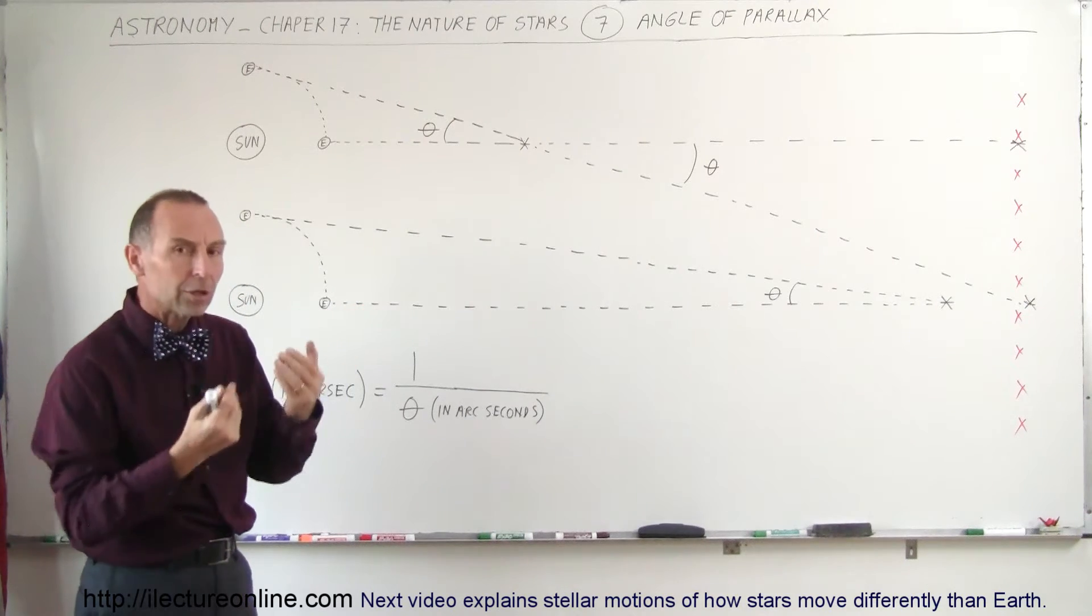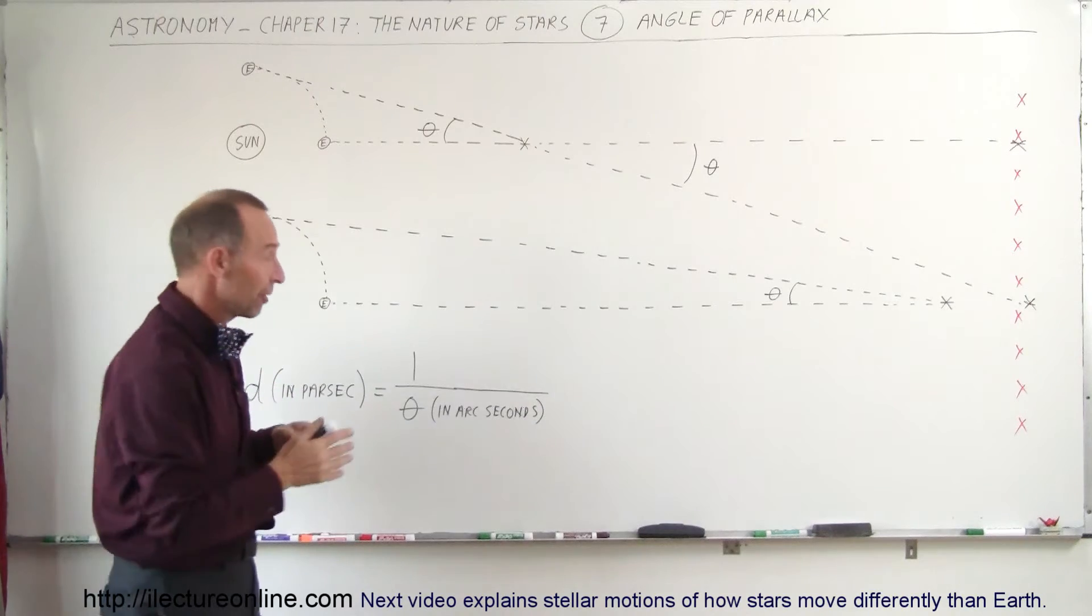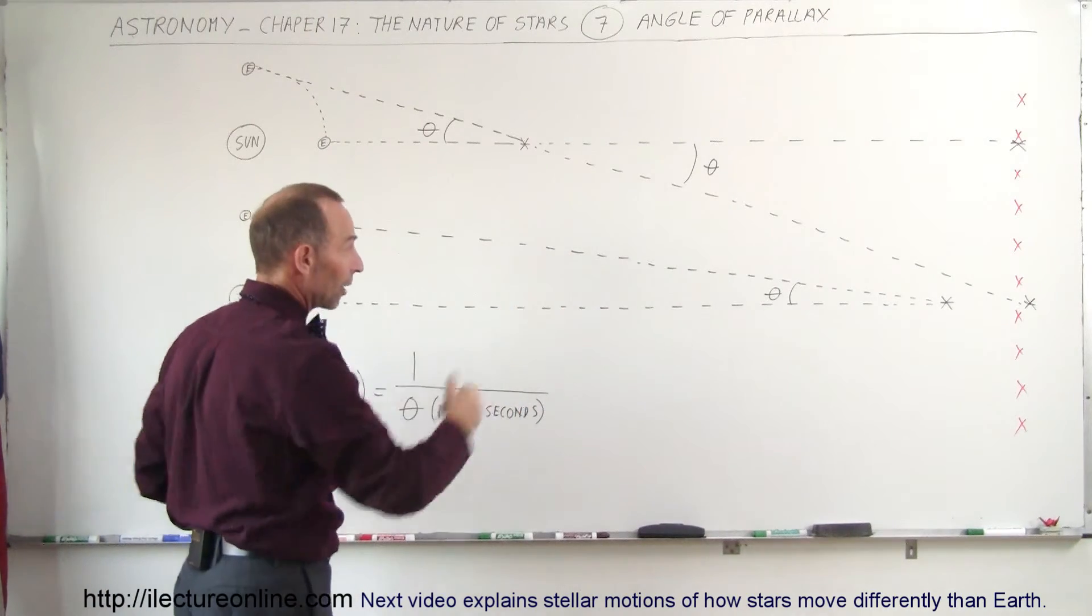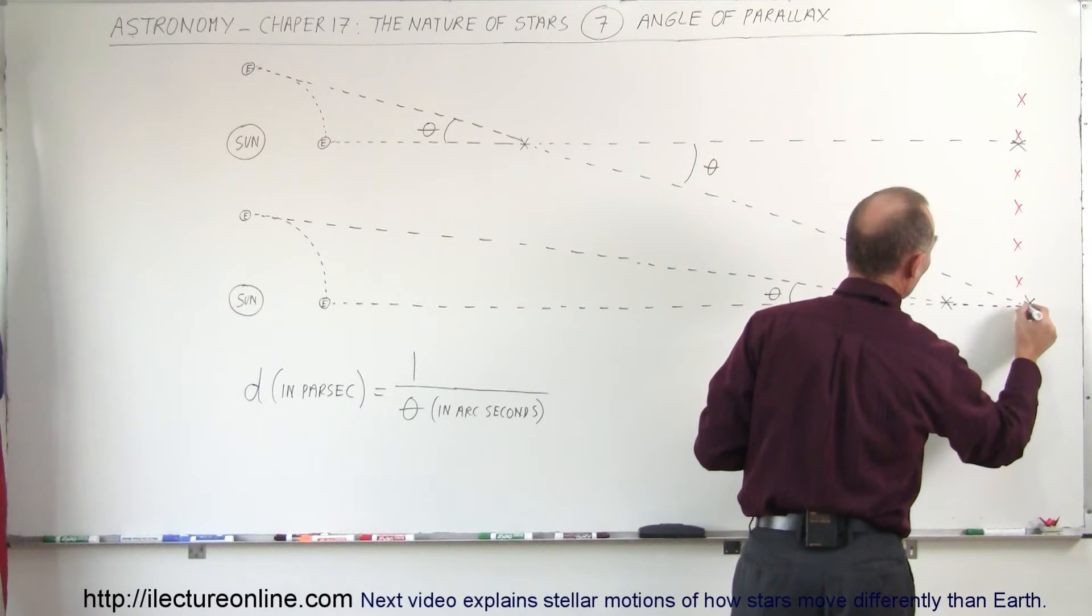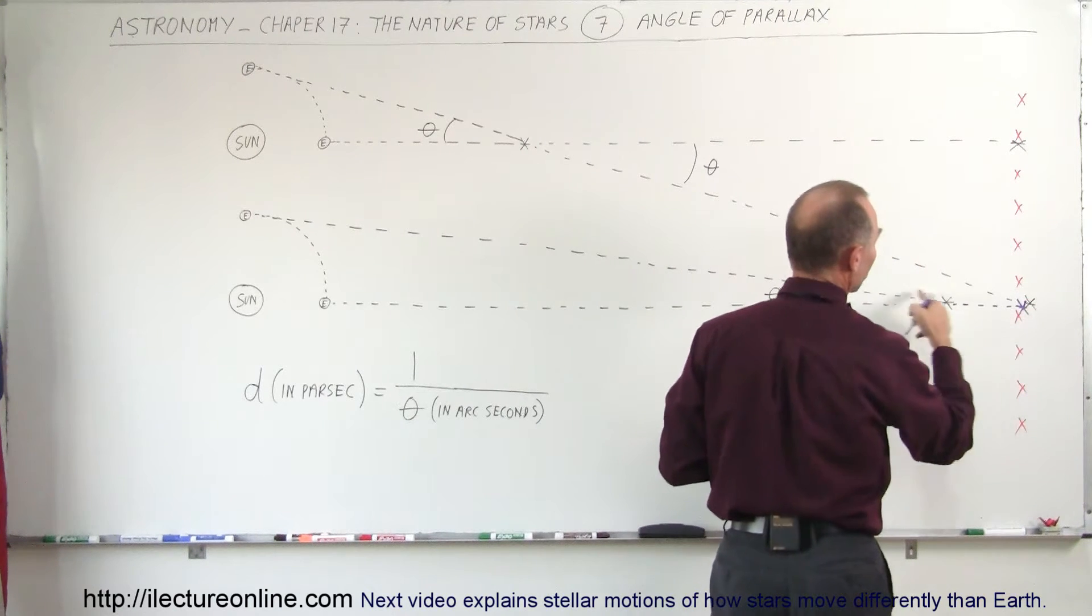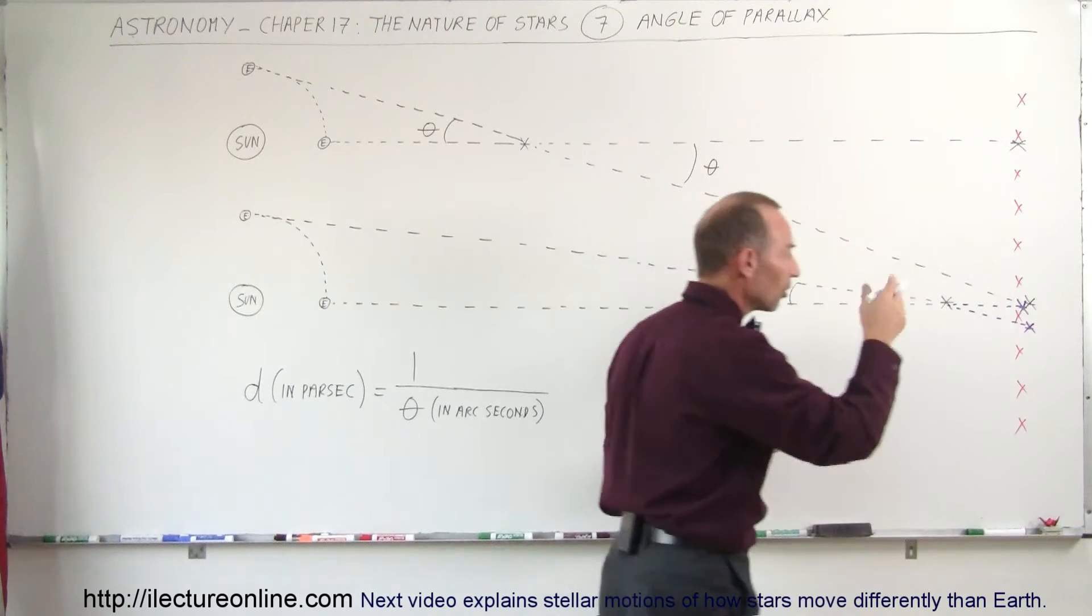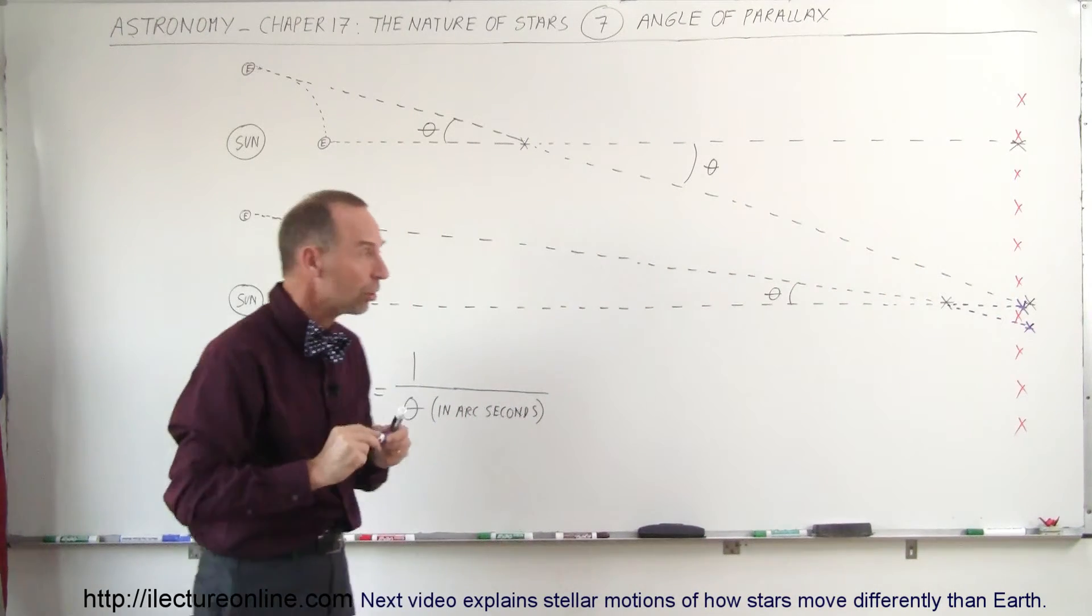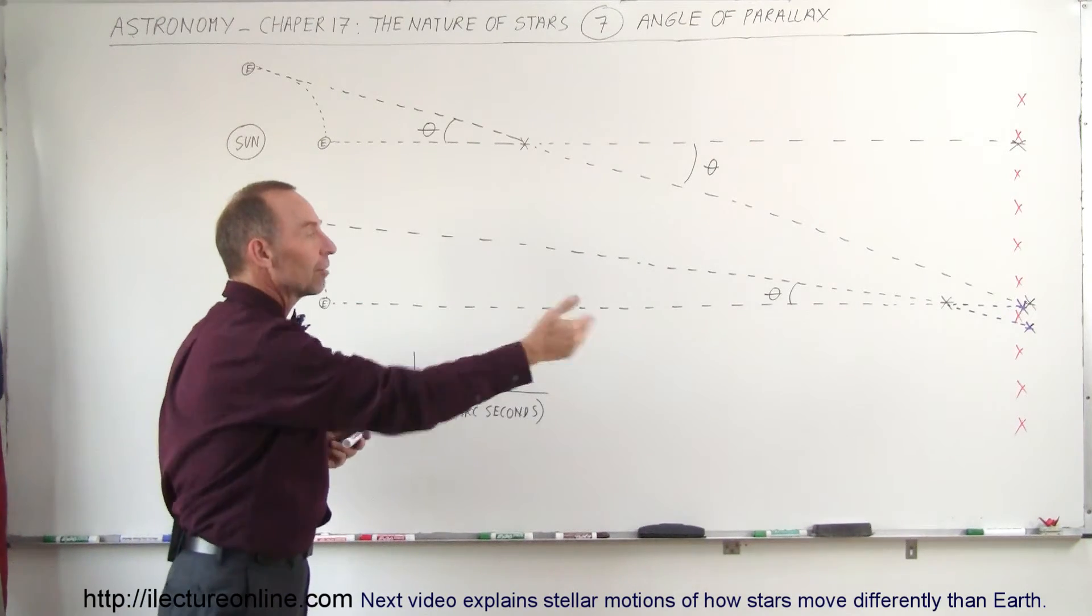The larger that angle, the closer the star. The smaller the angle, the farther away. For example, if we take a look at this far away star right there, you can see that the relative positioning of where it would appear at this point in the Earth's orbit and then where it would appear at some other point in the Earth's orbit, you can see that that angle would be a lot smaller and so therefore you realize then that the object is a lot farther away.